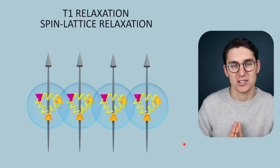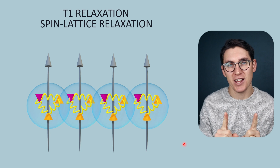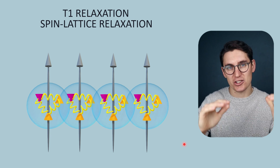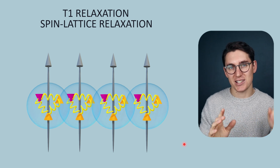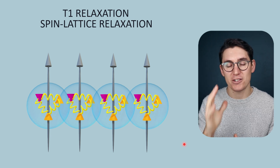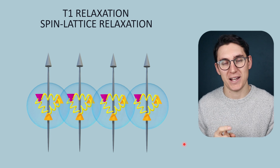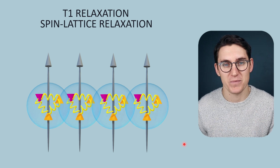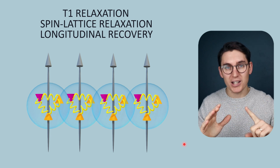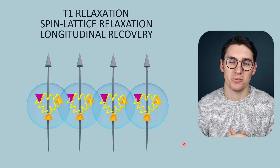T1 relaxation is also known as spin-lattice relaxation. In T2 relaxation it was the spin-spin interaction that caused the spins to de-phase and ultimately lose transverse magnetization — that's why T2 relaxation is known as transverse decay. In T1 relaxation, the spins interact with what is known as the lattice: the structural components, the macromolecules and proteins that don't have spin themselves, but when spins interact with them, it causes those spins to gain longitudinal magnetization and start to realign with the main magnetic field. Spin-lattice relaxation is therefore also known as longitudinal recovery, because we are regaining that longitudinal magnetization.